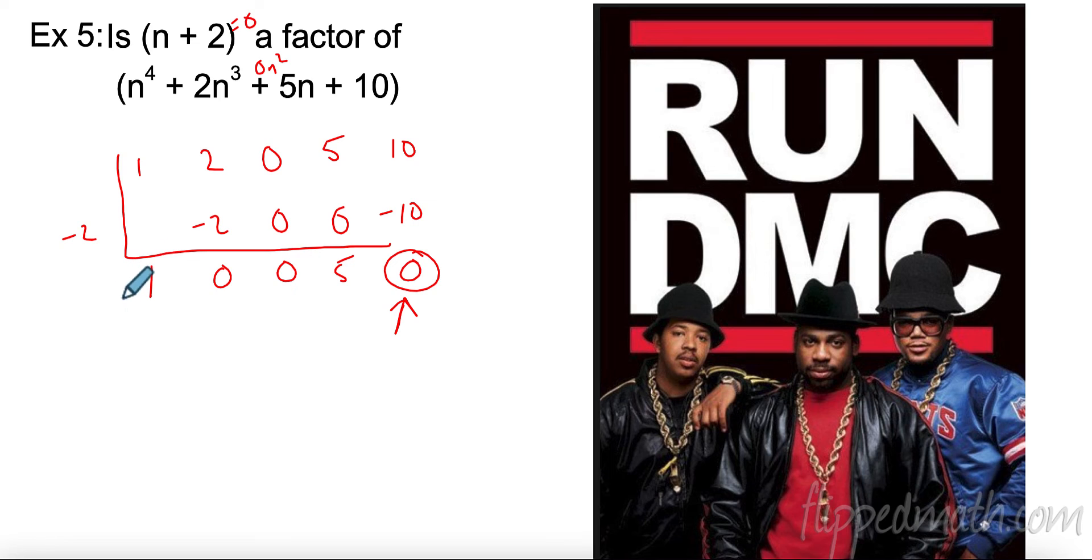Remember, my last thing is going to be 0. So this would be n to the third, n squared, n, no n. That would be my remainder. Since my remainder is 0, that means it's a factor. It goes in perfectly even. Well done. Great job. All right, let's go to the next one, number 6. Before we do, run DMC. Very old school. Still love them today. Some things are great in the past and still work today. Long division was great in the past, still works today.